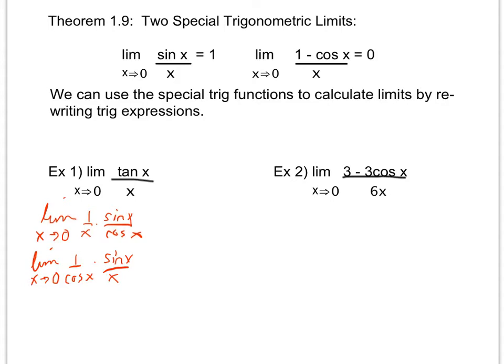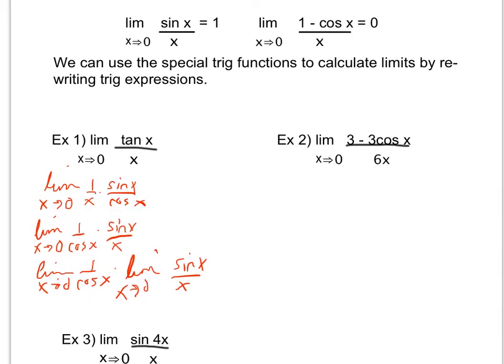Using the limit product property — which says the limit of a product equals the product of the limits — I split this into the limit as x approaches zero of one over cosine of x, times the limit as x approaches zero of sine of x over x. Using direct substitution on the first part, cosine of zero equals one, so that gives one over one, which is one. The second part I recognize as the special formula — the limit as x approaches zero of sine of x over x equals one. So I get one times one, and the overall limit is one.